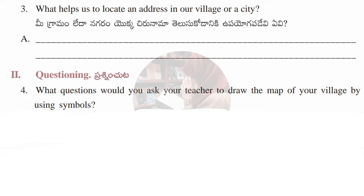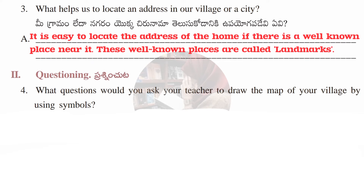Third question: what helps us to locate an address in our village or city? Answer: it is easy to locate the address of a house if there is a well-known place near it — these well-known places are called landmarks.